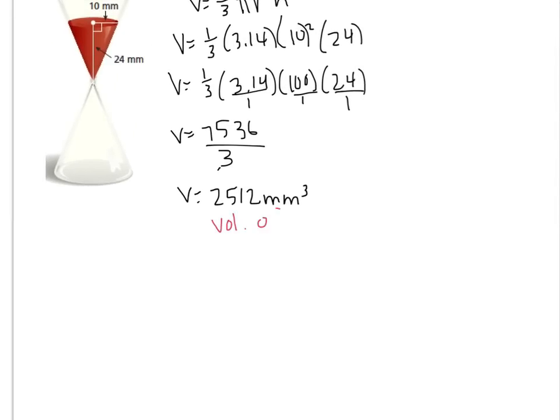But this isn't the answer. This is just the volume of sand. I want to know how many seconds I have to answer the question. So they tell me back up earlier that it falls at a rate of 50 cubic millimeters per one second. So I can solve a proportion to find out how many seconds it's going to take me if I have 2512 cubic millimeters.